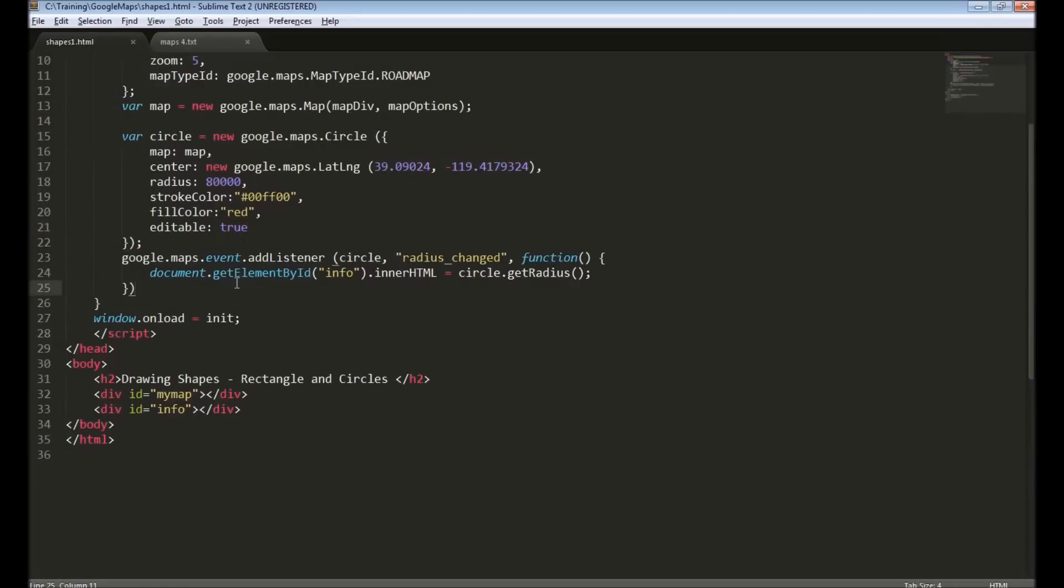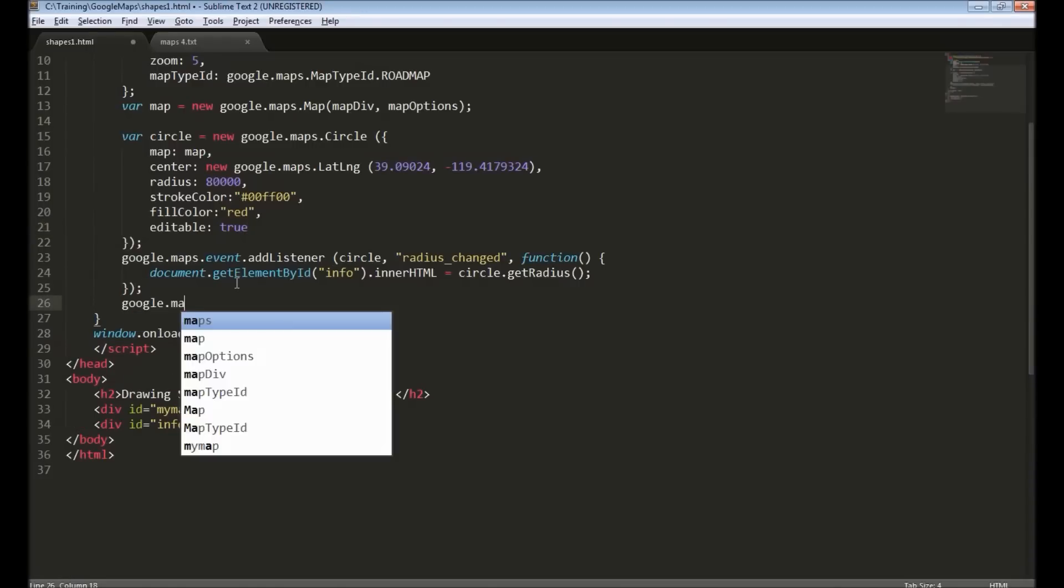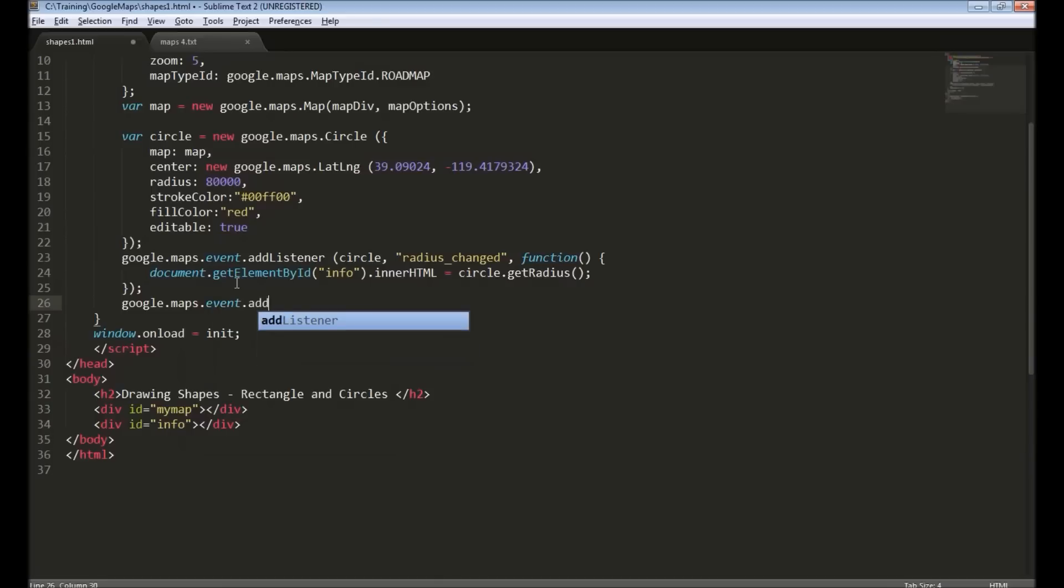Similarly you can listen to another event called center_changed for circle. This is triggered when circle is moved around in the map. Circle and center_changed, provide the function.